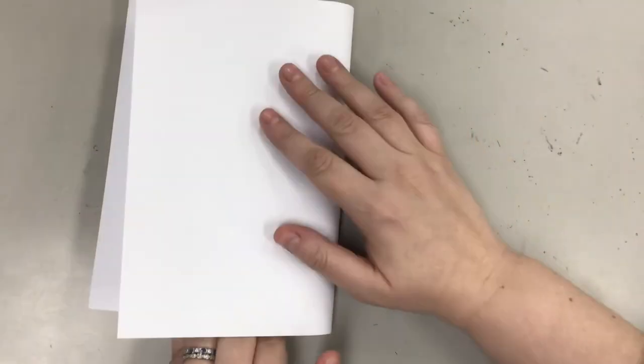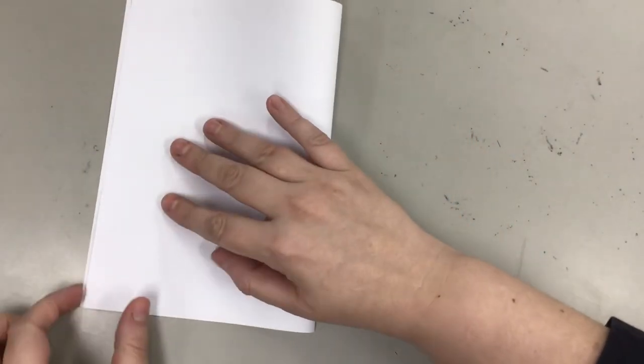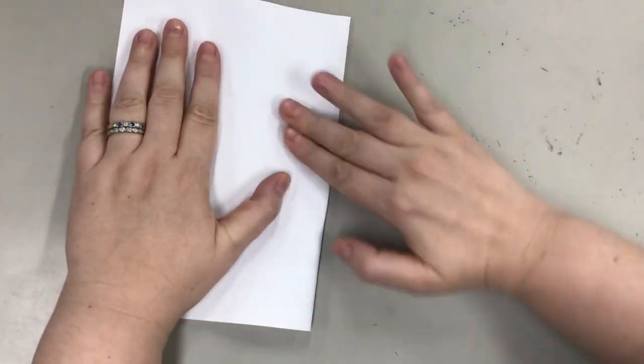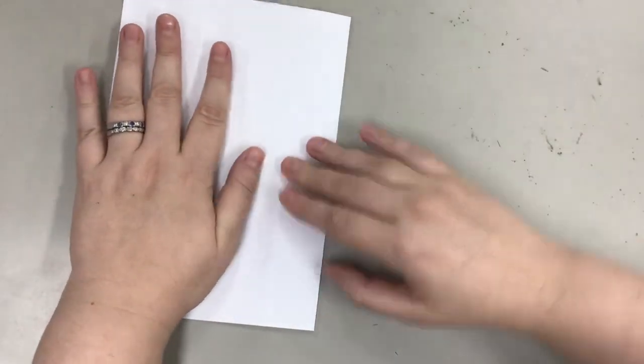You're going to start with a plain piece of paper and you're going to fold it in half. Try to make sure the corners are lined up and then you smooth it out. You're going to fold it again.